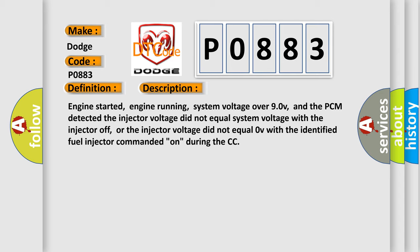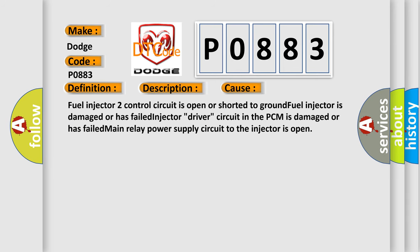This diagnostic error occurs most often in these cases: Fuel injector two control circuit is open or shorted to ground. Fuel injector is damaged or has failed. Injector driver circuit in the PCM is damaged or has failed. Main relay power supply circuit to the injector is open.